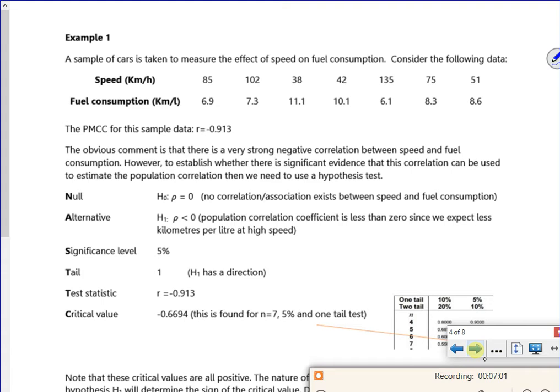So it says here, a sample account is taken to measure the effect of speed on fuel consumption. Consider the following data. So I've got an R value of minus 0.913. That's really strong negative correlation. And this is my sample, n is 7. So we're going to see if there's significant evidence. If that value is far enough away, for it to make a difference to what it should be. So my null hypothesis is that rho is 0, there's no correlation.